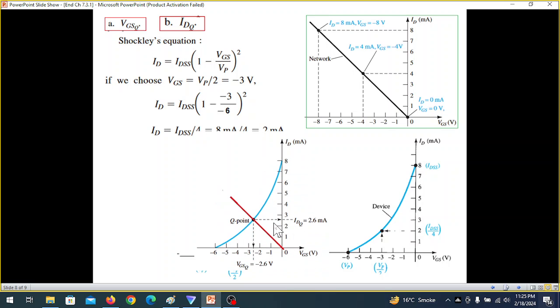So we can say that Q point from the graph is IDQ is 2.6 milliampere. And similarly, VGSQ is minus 2.6 volt. So this is the answer that we are expecting for part A and part B. Okay. So this is done.